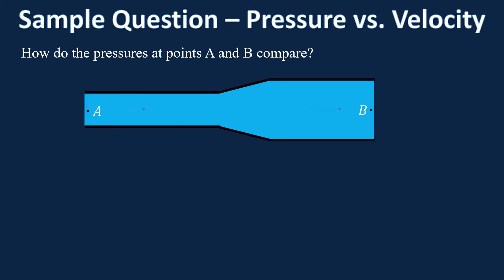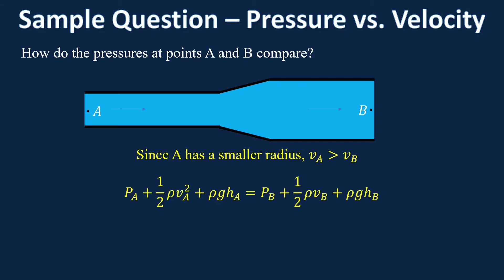Here's a sample question that looks at a pretty important relationship in fluid dynamics for AP Physics: pressure versus velocity. The question says, how do the pressures at points A and B compare? First we'll look at the velocities at point A and B. Using continuity, since the mass flow rate is the same at points A and B, A is going to have a bigger velocity in order to have the same mass flow rate as at point B.